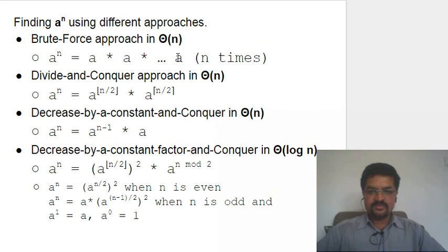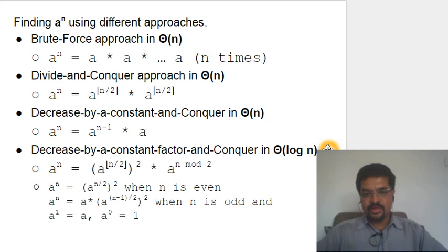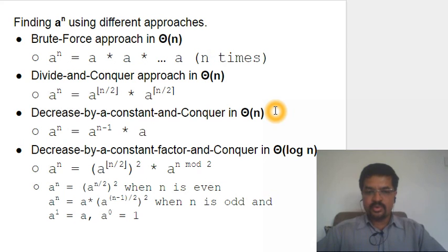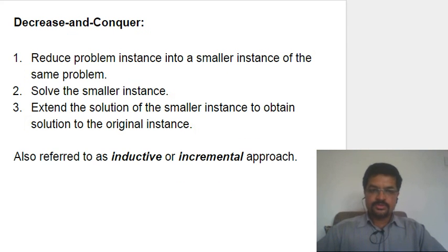So we solved a^n using four different methods: the first three solve it in Θ(n) time, and the last one solves it in Θ(log n) time. This is a huge improvement — when n is a million, the first three methods take on the order of a million operations, but the last one takes only about 20 operations, because log₂(1,000,000) ≈ 20.